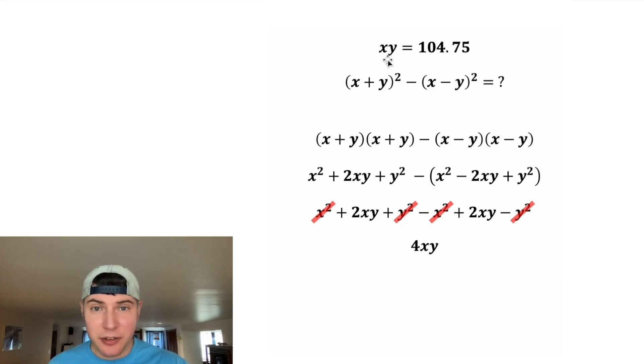And now for the xy, that is what we were given at the very beginning. xy is equal to 104.75. And then after we do 4 times 104.75, we get 419.